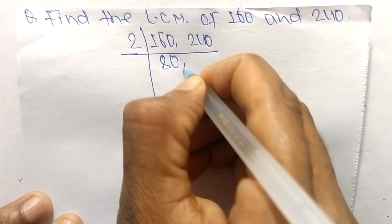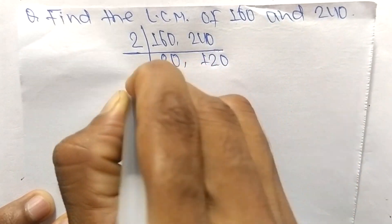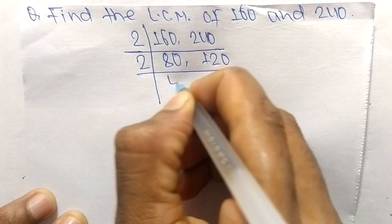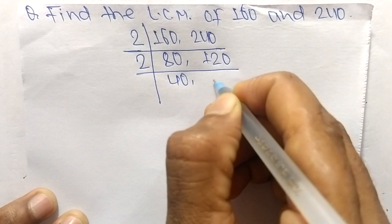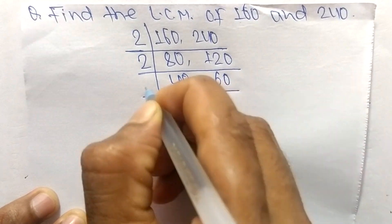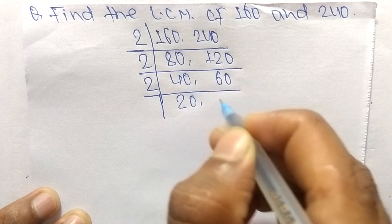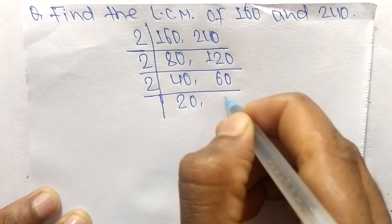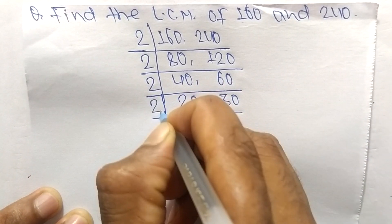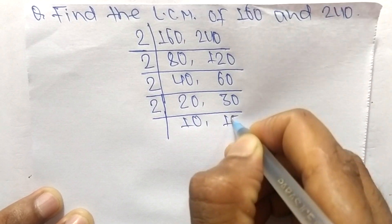2 times 80 equals 160, and 2 times 120 equals 240. Again divisible by 2: 2 times 40 equals 80, and 2 times 60 equals 120. Again divisible by 2: 2 times 20 equals 40, and 2 times 30 equals 60. Again by 2: 2 times 10 equals 20, and 2 times 15 equals 30.